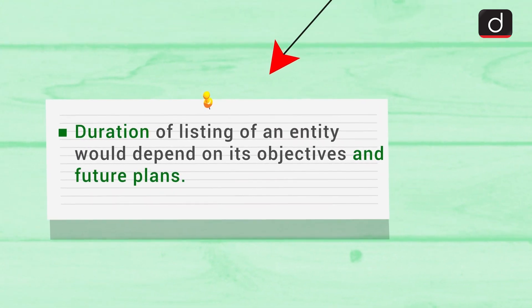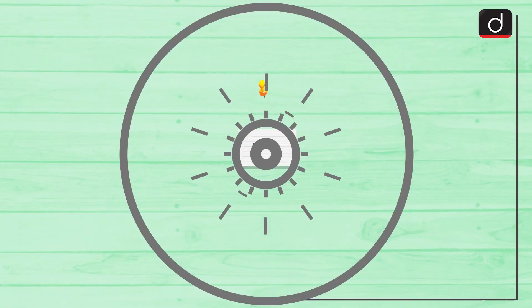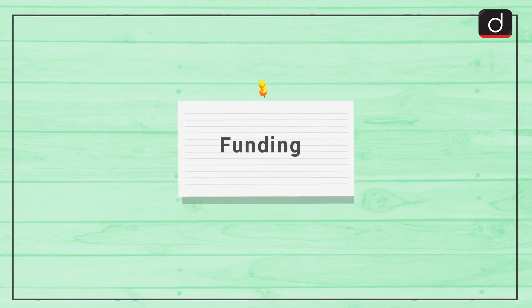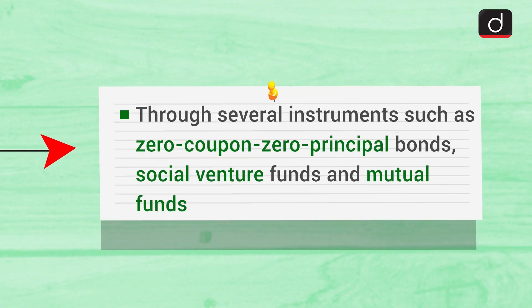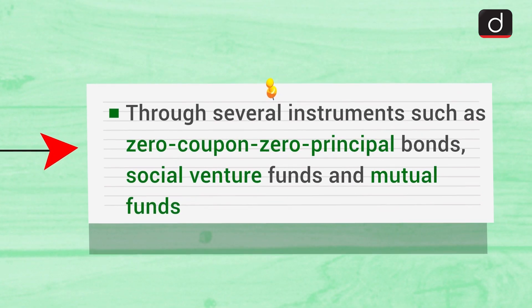The duration of listing of an entity would depend on its objectives and future plans. It is proposed to raise funds through several instruments such as zero-coupon, zero-principal bonds, social venture funds, and mutual funds.